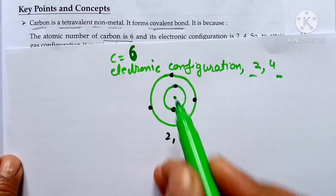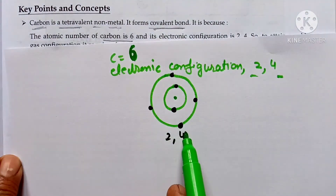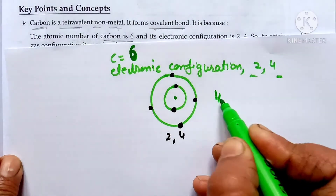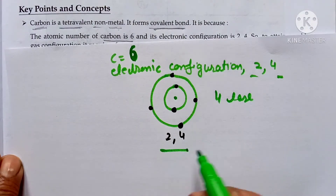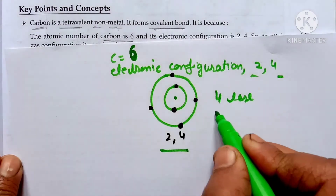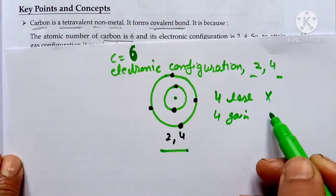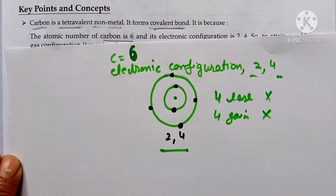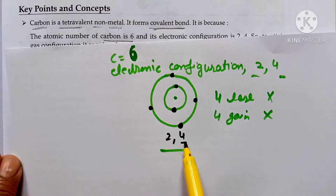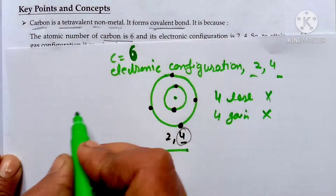Carbon's first shell has 2 electrons and the second shell has 4 electrons. Carbon has 4 electrons in its outermost shell. To be stable, carbon needs to either lose or gain 4 electrons to achieve a maximum of 8 electrons in its outermost shell. These outermost electrons participate in bonding.